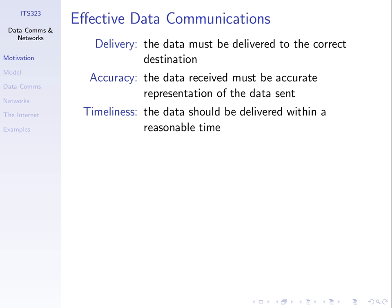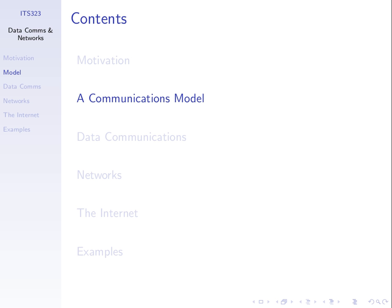Different applications have different requirements for what is a reasonable time. We'll see some examples over the next few topics. We want to share data between computing devices and want that to be effective — delivered correctly, accurately, and within a reasonable time. Often when we look at the problem of communications, we can consider the system as some model, some block diagram.